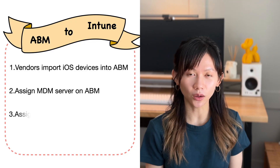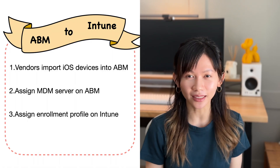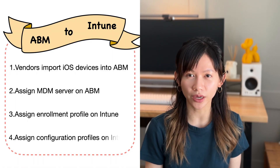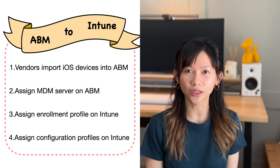Step 3 is assigning the enrollment profile, if you have more than one on Intune. This step tells the device how its initial setup is going to be — such as whether you're going to include enabling Siri or signing in to Apple ID, or you can skip them altogether. Finally, the devices are assigned to configuration profiles for granular configs such as which Wi-Fi to connect to, the look and feel of the iPad, which apps it should have, and much more. Let me walk you through what this process looks like in a bit more detail.